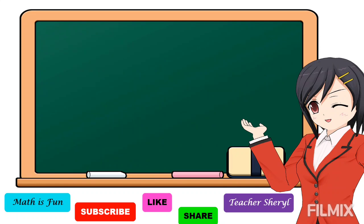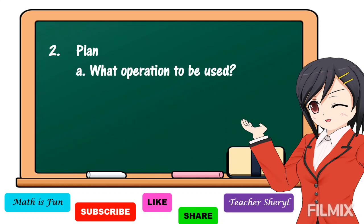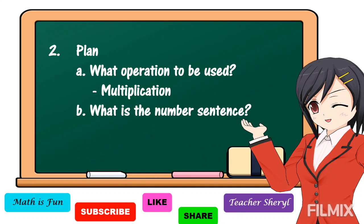After understanding the problem, next we are going to make a plan. In our routine problem, we are going to identify what operation to use. In our problem, we are going to use multiplication. The number sentence is: 3 and 76 hundredths times 32 is equal to n.